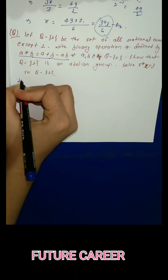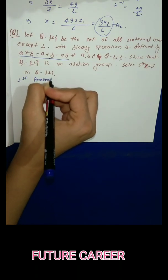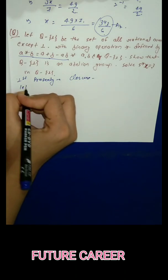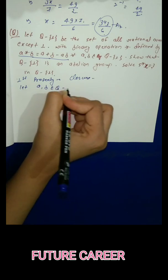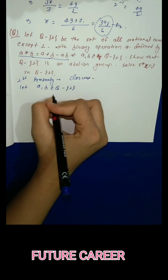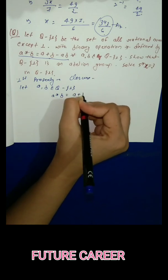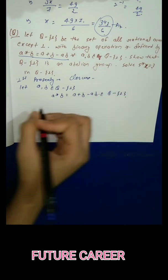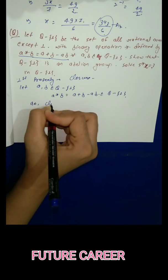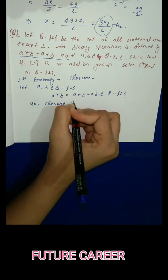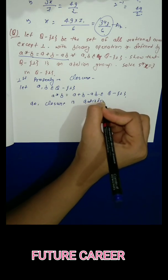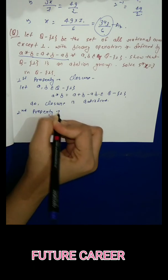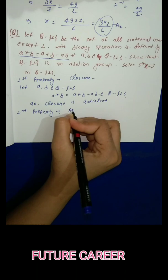First property: Closure. Let a,b belong to Q-{1}, so a★b = a+b-ab belongs to Q-{1}. Closure is satisfied.